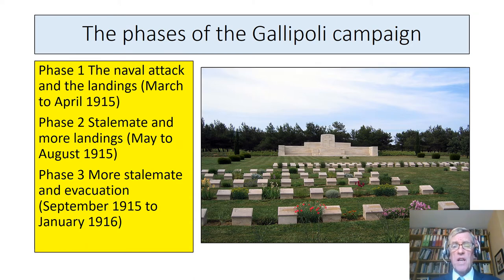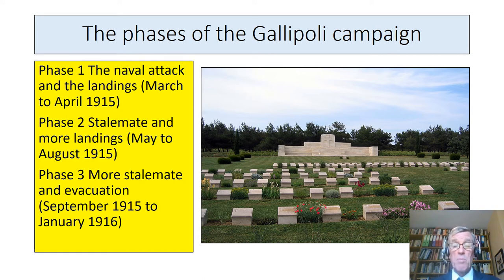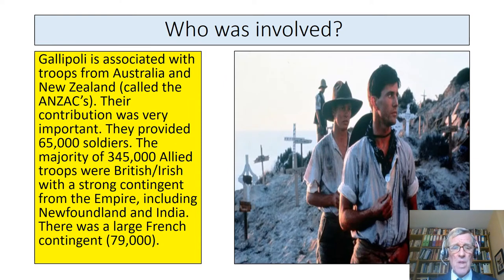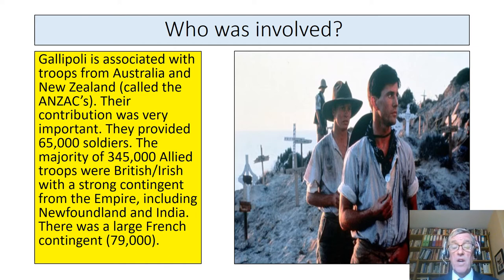I've divided the phases of the Gallipoli campaign into three. Phase one: a naval attack and the landings, March to April 1915. Phase two: stalemate and more landings. Phase three: more stalemate and then a final evacuation of British and French troops. And again, when we talk about British, we mean the British Empire. Gallipoli is often associated with troops from Australia and New Zealand, called the Anzacs — their contribution was very important, providing about 65,000 soldiers. But the majority of the 345,000 Allied troops were British and Irish with a strong contingent from the Empire, including Newfoundland and India, and there was a large French contingent as well.